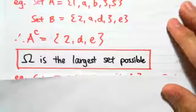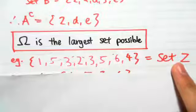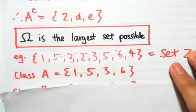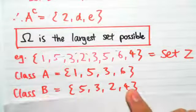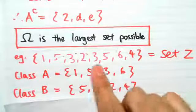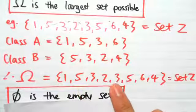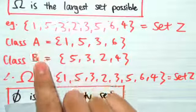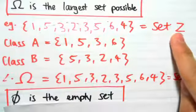Next we go to omega. The notation omega basically means the largest set possible. Say I start off with a really big set: {1, 5, 3, 2, 3, 5, 6, 4} — we call this set Z. If I separate this into two mini sets A = {1, 5, 3, 6} and B = {5, 3, 2, 5}, omega is the largest set you can think of, which is the entire set Z. So omega equals {1, 5, 3, 2, 3, 5, 6, 4}. Remember, omega is never equal to the subsets or mini sets A and B — it's the largest set, the big set we came up with at the beginning.